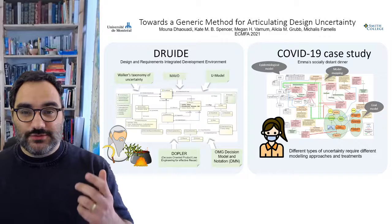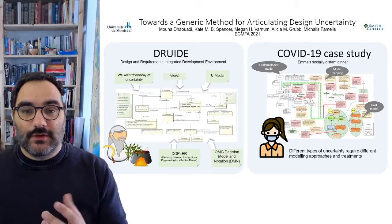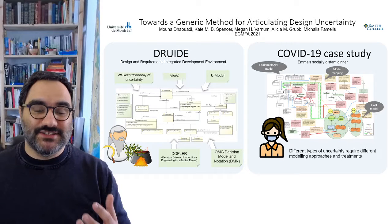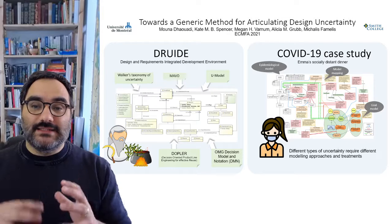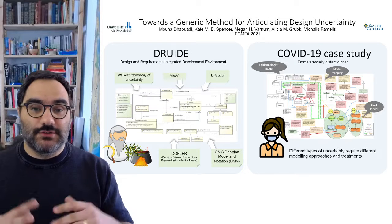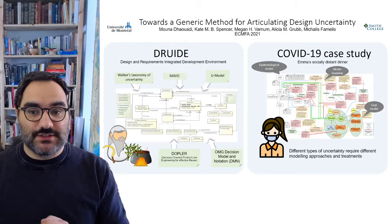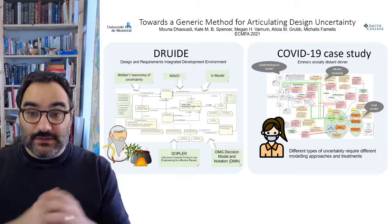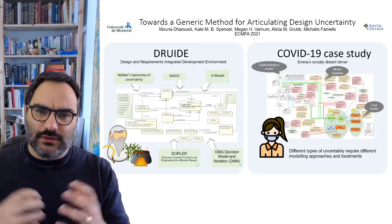In this paper we introduced Druid. Druid consists of a metamodel and a method for articulating design uncertainty in models. Druid combines ideas from many researchers that have worked to represent different aspects of decision-making under uncertainty in software models, and combines them into one holistic approach.